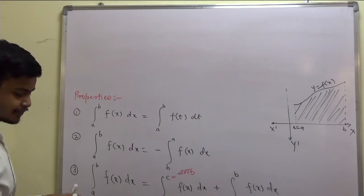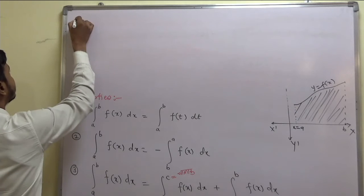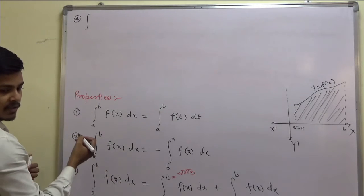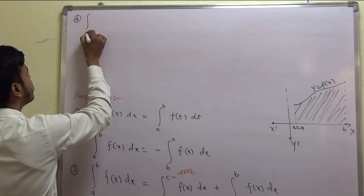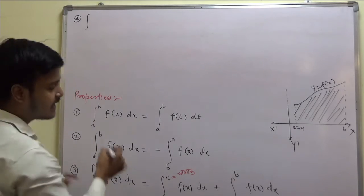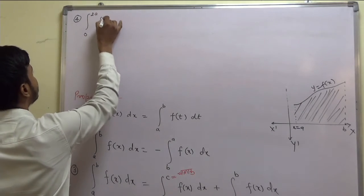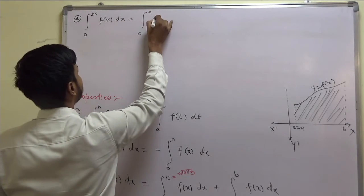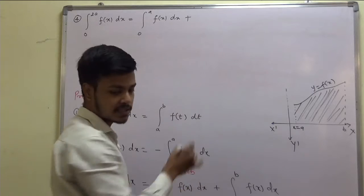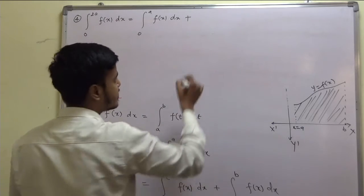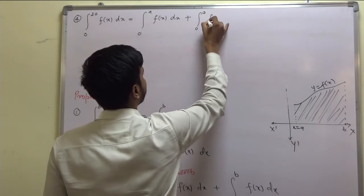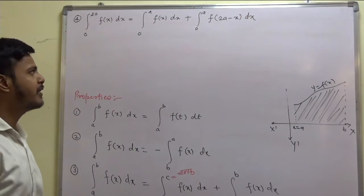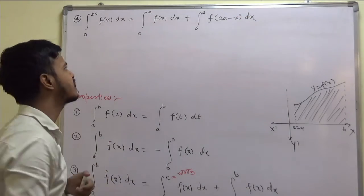The fourth property is: integral from 0 to 2a of f(x) dx can be written as integral from 0 to a of f(x) dx plus integral from 0 to a of f(x) dx. This is one of the properties, though we hardly make use of it.